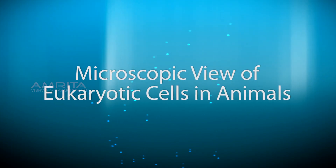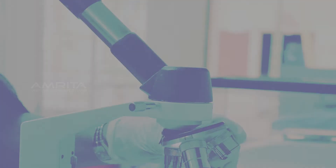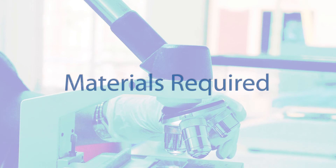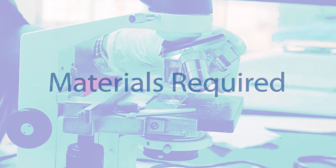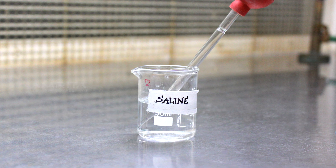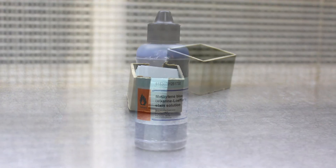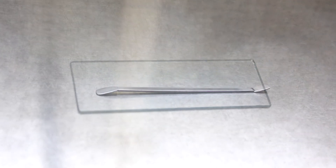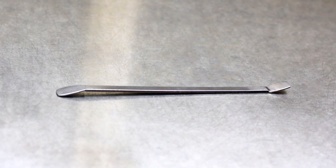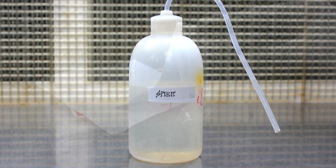For the microscopic view of eukaryotic cells in animals, we require materials like saline water, cover slip, methylene blue stain, slide, buccal mucosal cell scraper, spirit, and tissue paper.